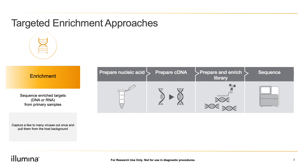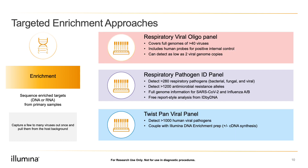Most of the enrichment panels I'll show you recommend about a million or so reads per sample. With these methods, you need a probe pool that targets your virus. Fortunately, you can make them simply by ordering oligos that walk along your viral genome, or you can leverage a commercially available probe pool, which can usually be pretty cost-effective. So let's talk about some of those pools that are available today.